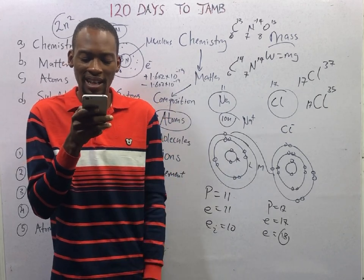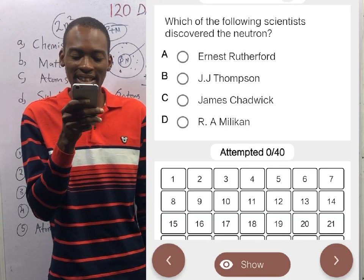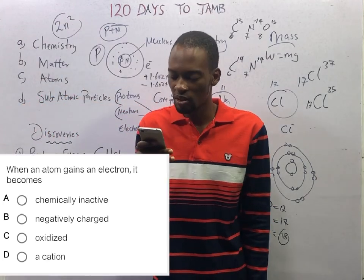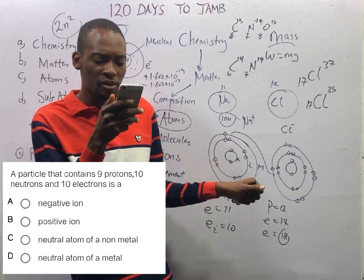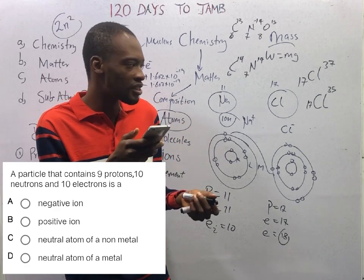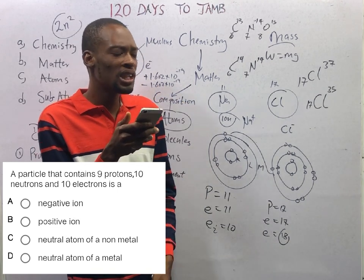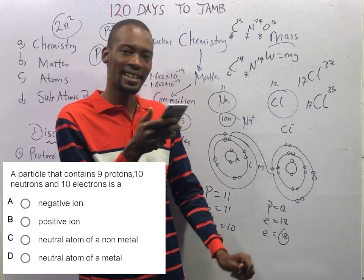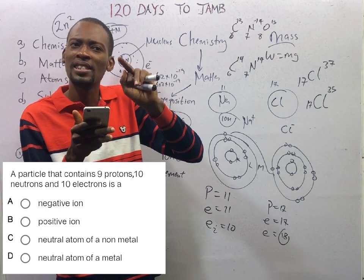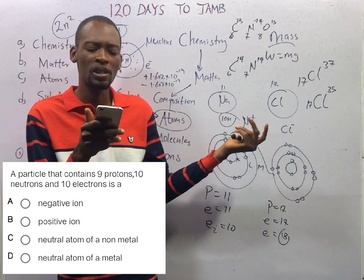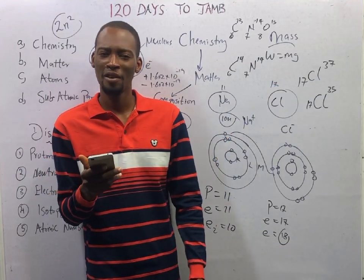Now answering the questions: which scientist discovered the neutron? James Chadwick, in 1932. When an atom gains an electron, it becomes negatively charged ion, as we explained. A particle with 9 protons, 10 neutrons, and 10 electrons — since the number of protons and electrons are not the same, it is an ion. It has gained electrons; 9 protons and 10 electrons means it has gained an electron, making it a negative ion. This brings us to the end of the class.